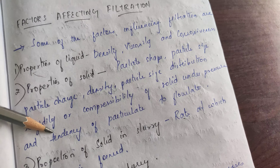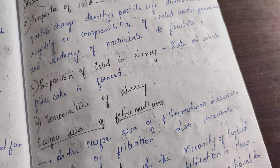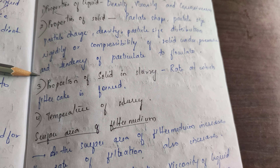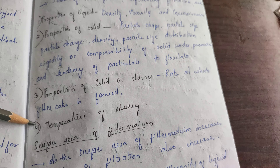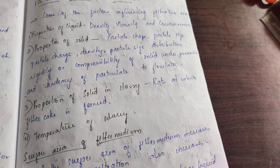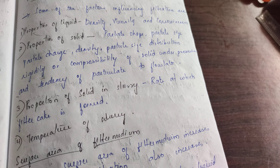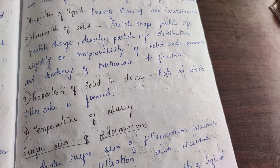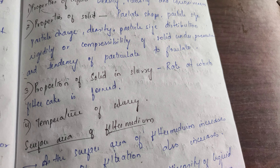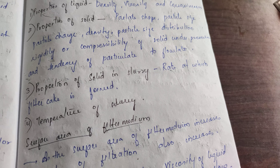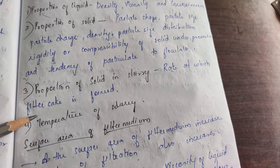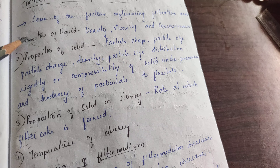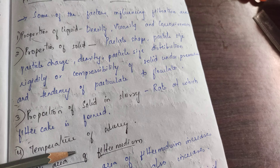Further solid properties include rigidity or compressibility under pressure, and the tendency of particles to flocculate. Other factors are the proportion of solids in the slurry — meaning how much solid is present — and the temperature of the slurry. The filter cake is the solid matter accumulated on the filter medium. For example, when making a decoction, the tea dust powder accumulated on the strainer is the filter cake.